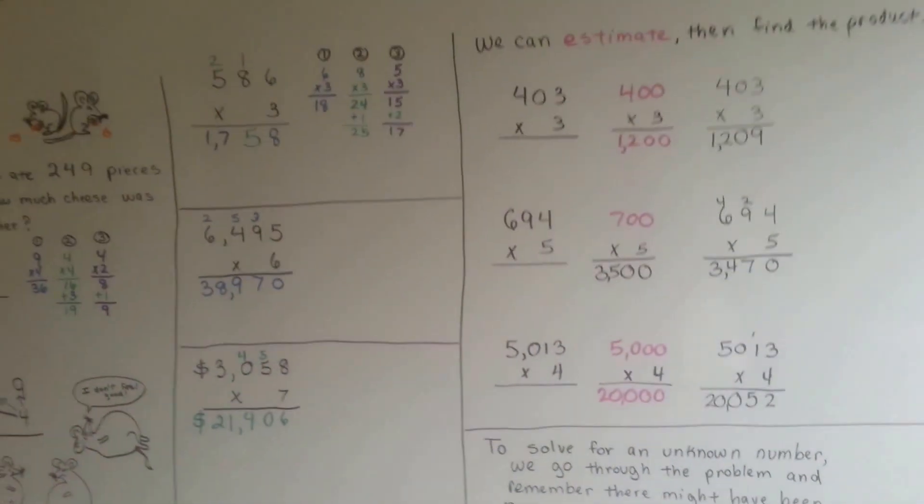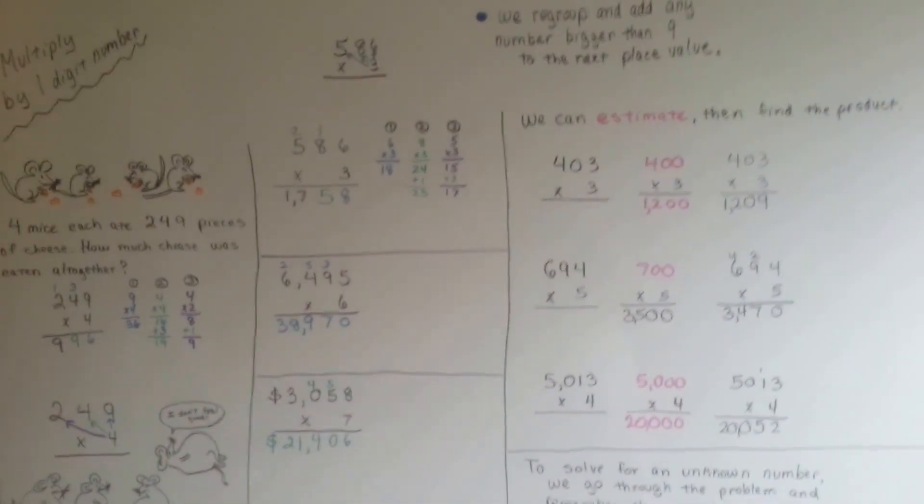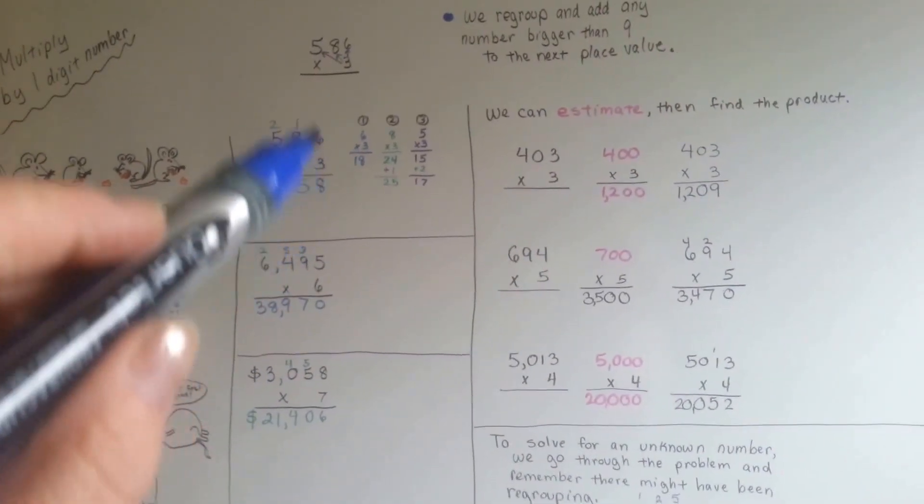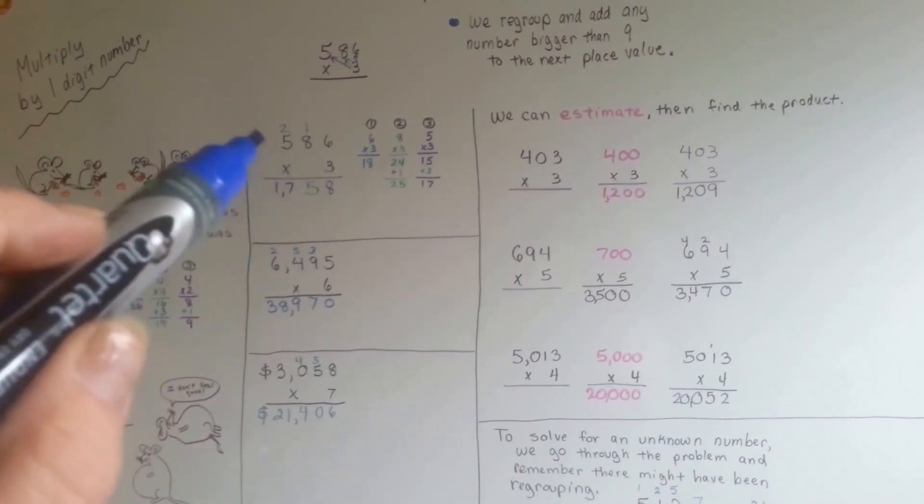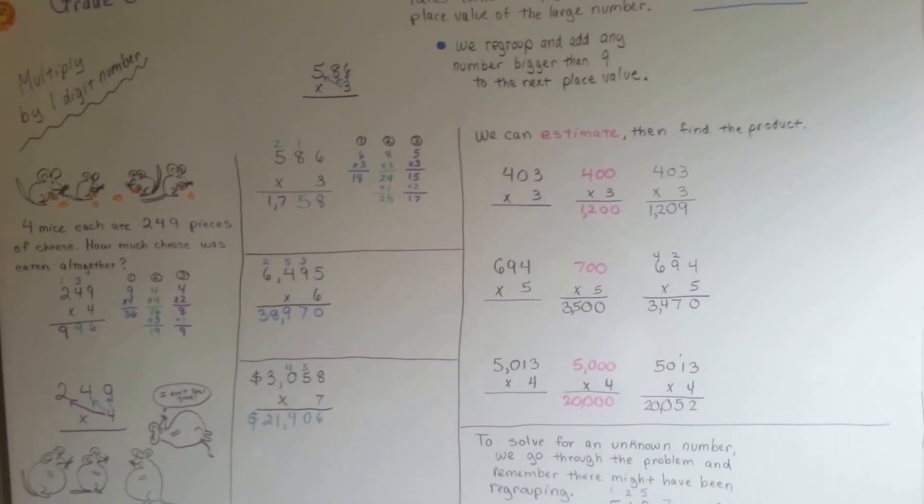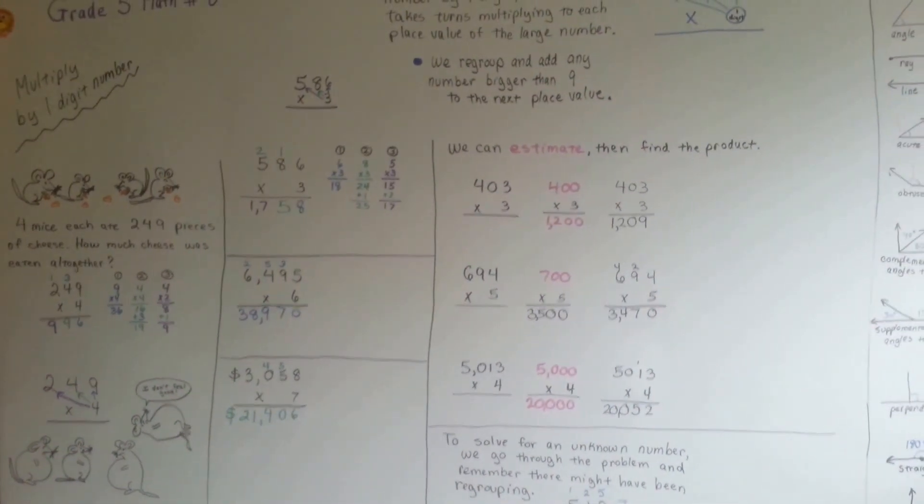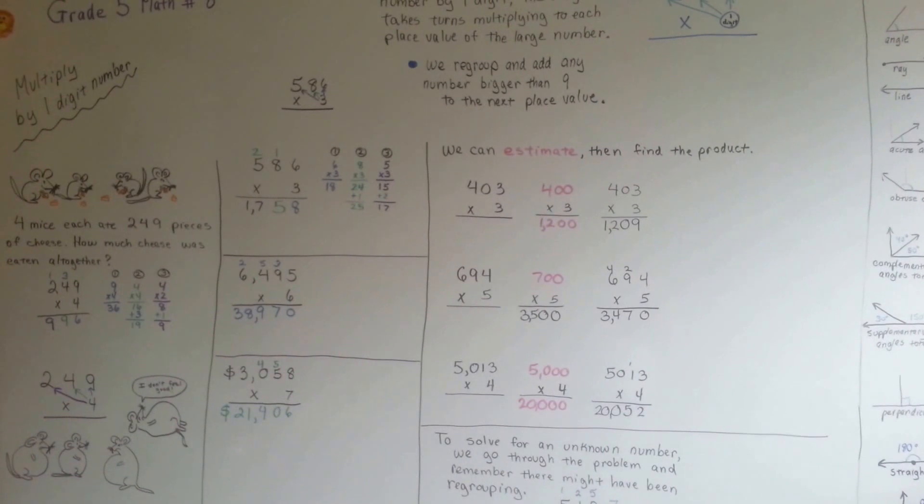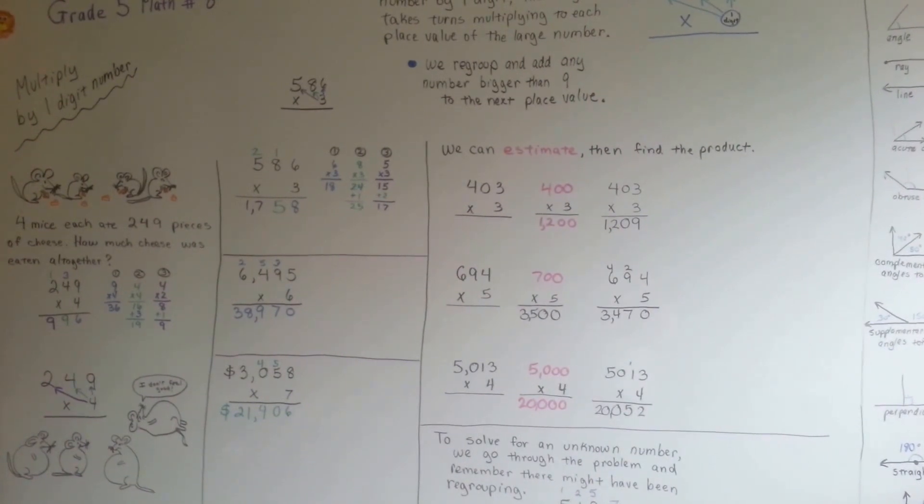Multiplying by a 1 digit number, we just help the 1 digit take turns going through the 1s, 10s, 100s, 1000s, 1 by 1. We're going to multiply by 2 digits next. I'll see you there. Bye bye, thank you.